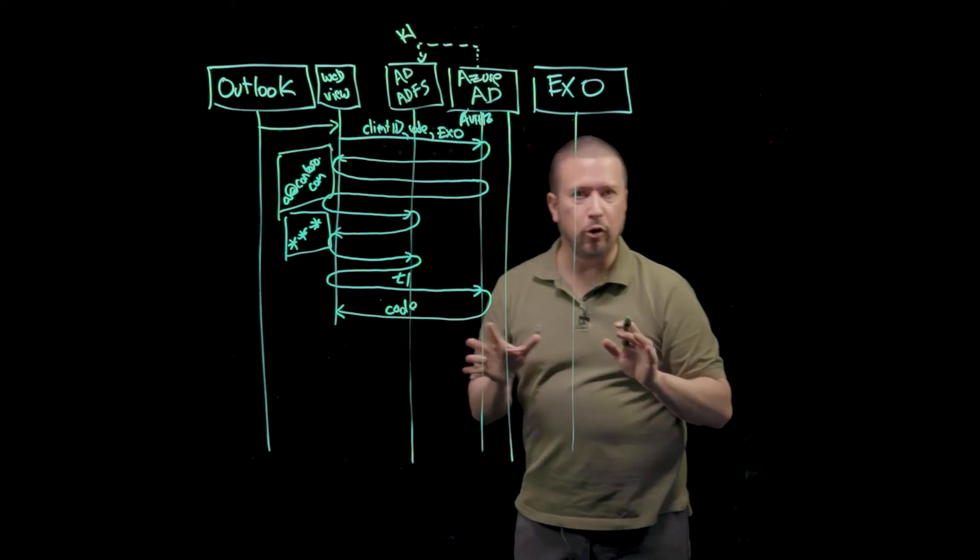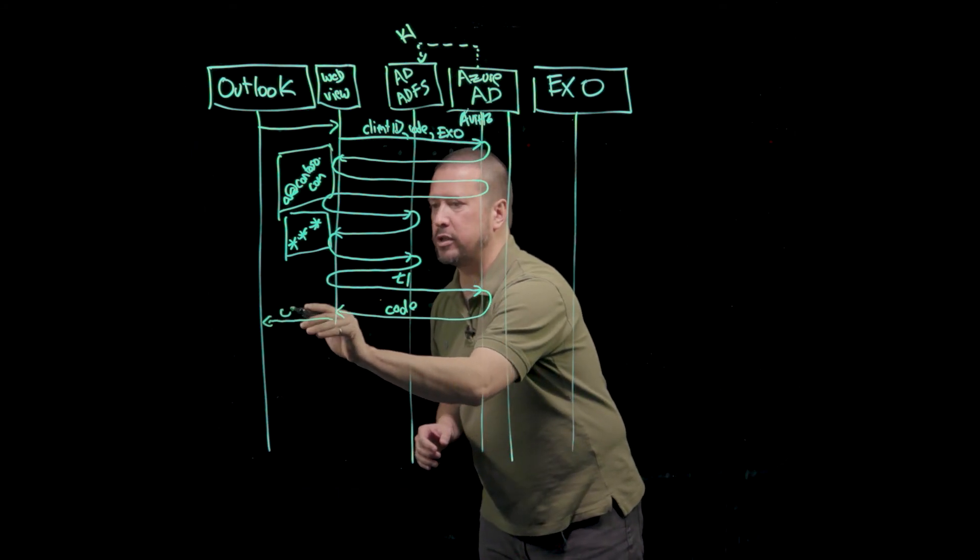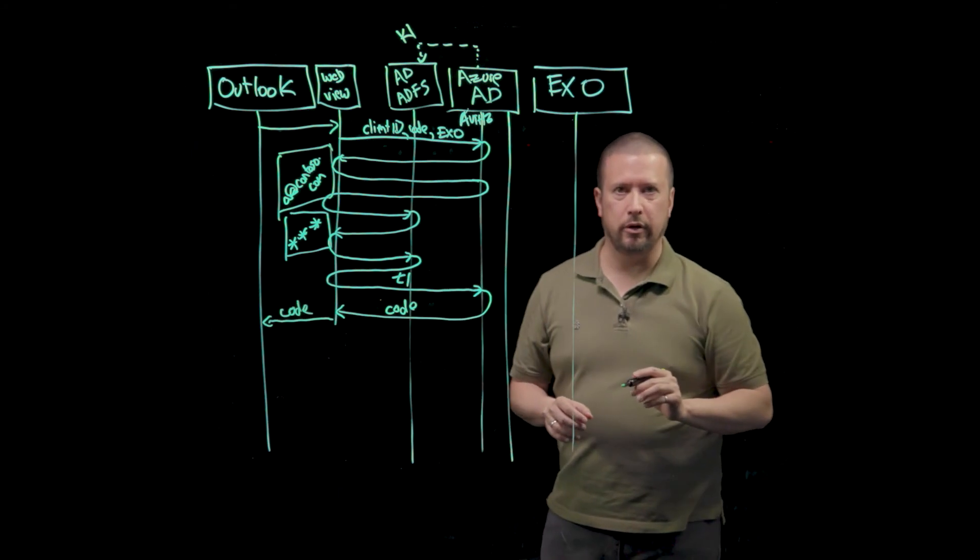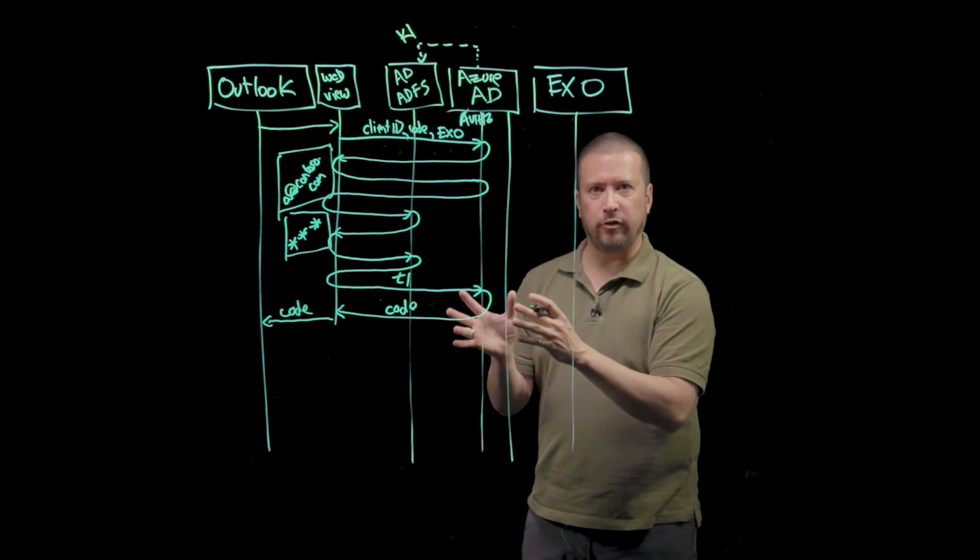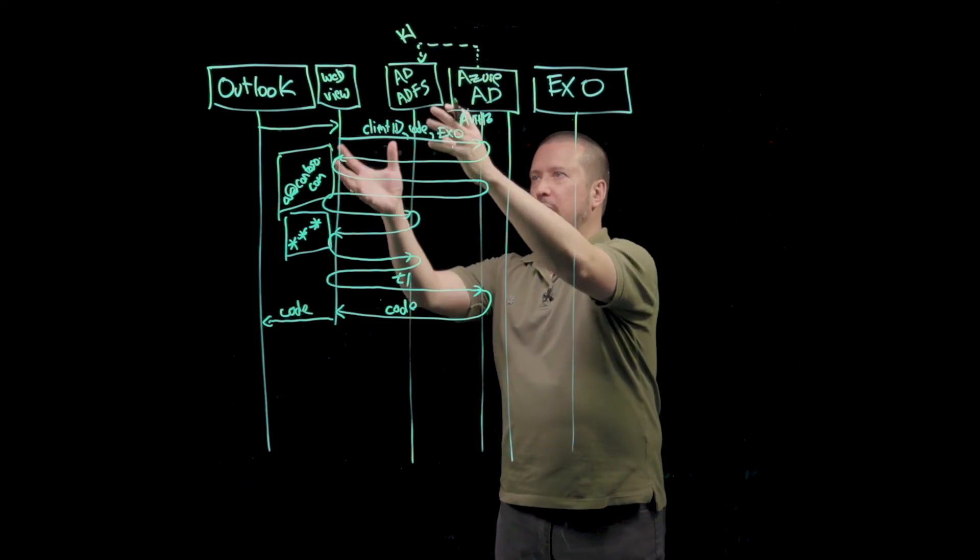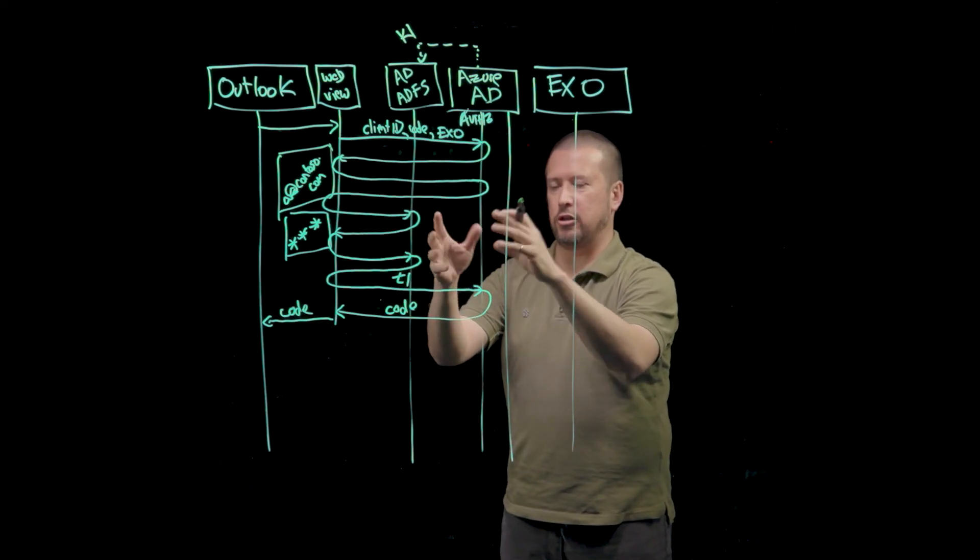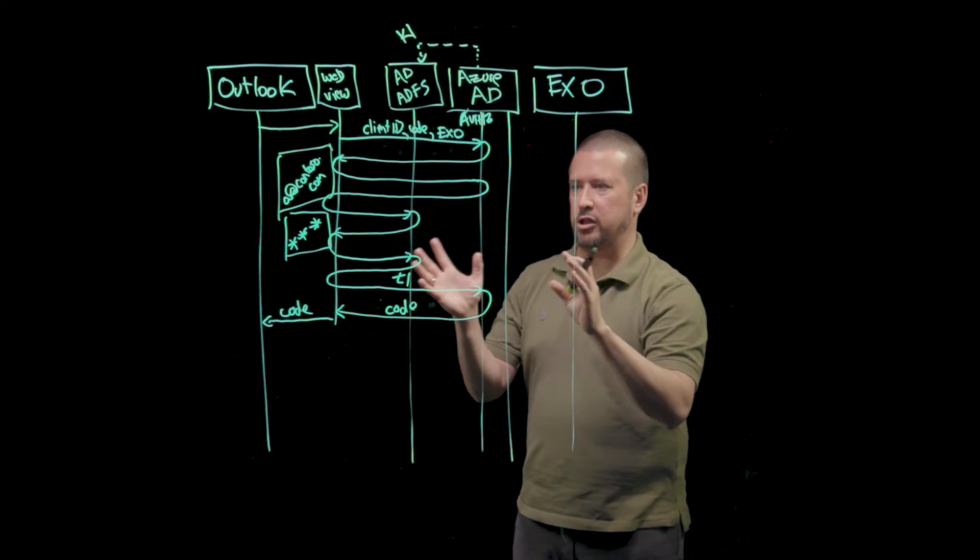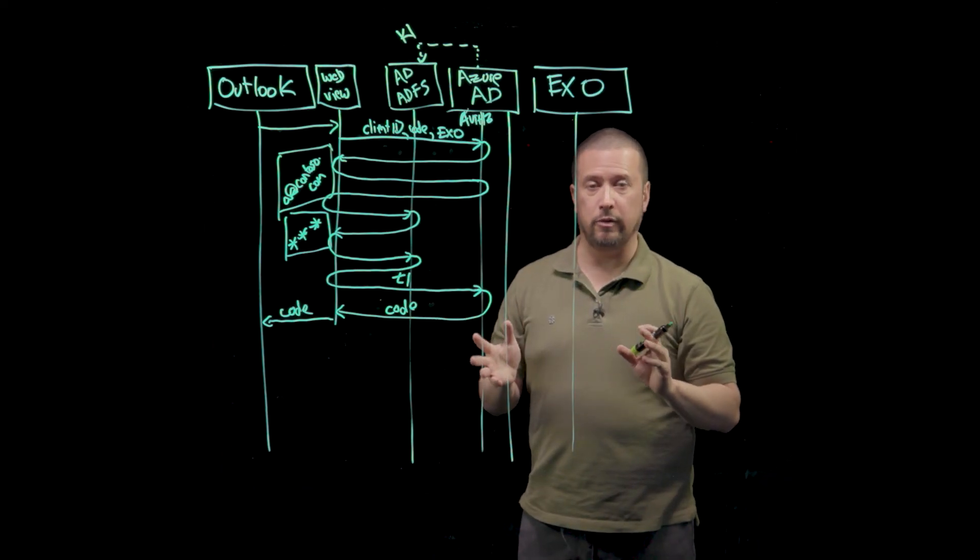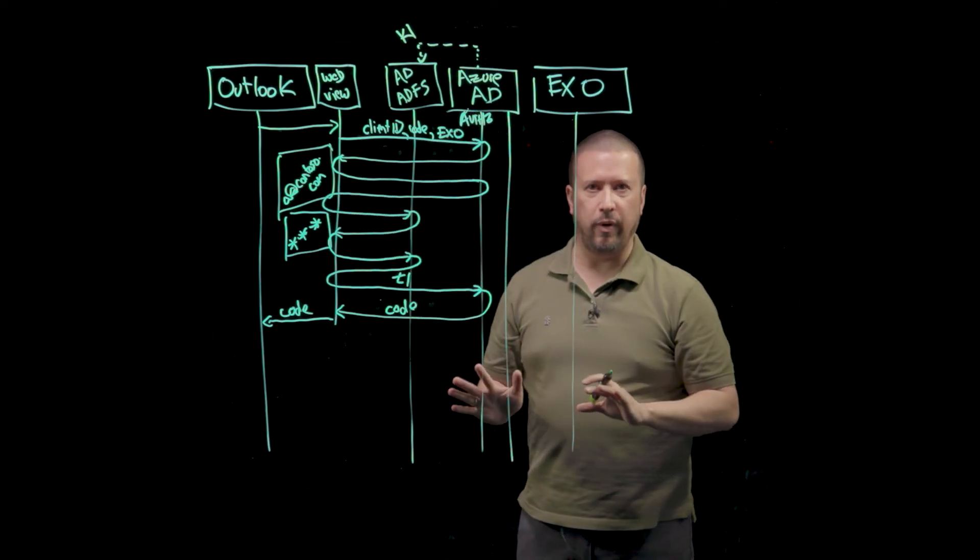The web view now knows that its job is done, so it closes and returns the authorization code to Outlook. And that ends the interactive part of the sign in, where Alice in the web view is doing things like federated authentication, adaptive authentication, maybe she needs to do multi-factor, maybe she needs to answer terms of use. All of that stuff happens in the interactive surface of the web view.